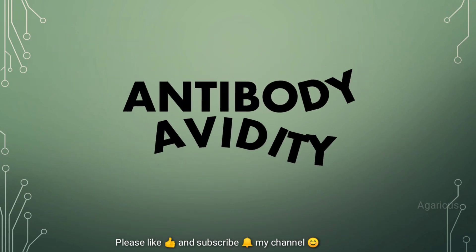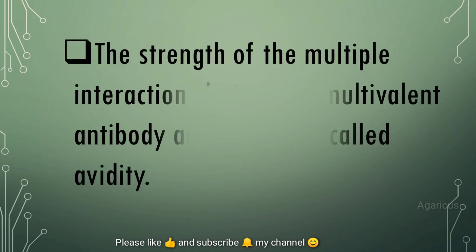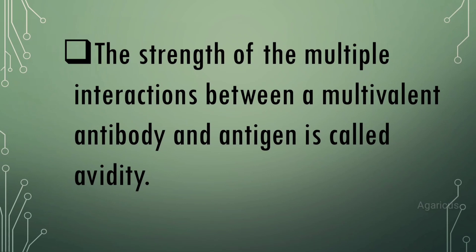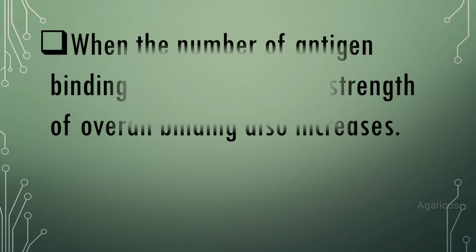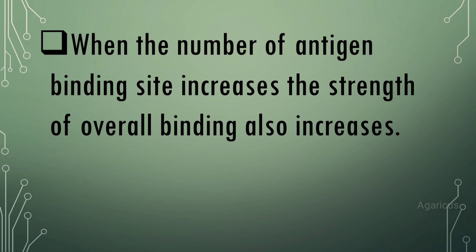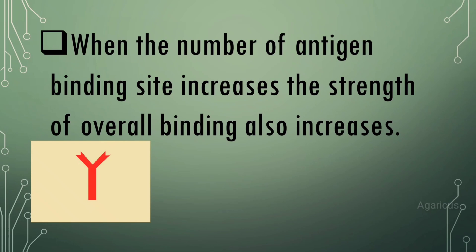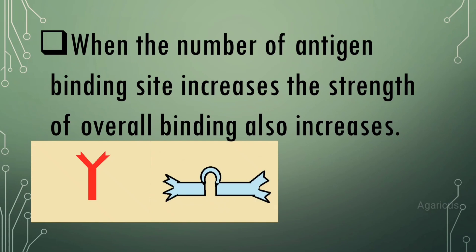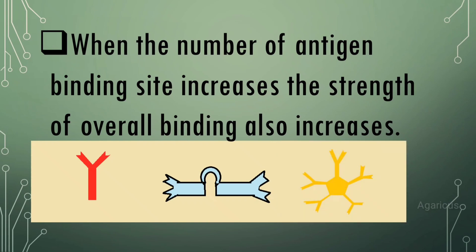Antibody avidity refers to the strength of the multiple interactions between a multivalent antibody and antigen. When the number of antigen binding sites increases, the strength of overall binding also increases. Immunoglobulin G has 2 binding sites, immunoglobulin A has 6 binding sites, and immunoglobulin M has 10 binding sites — meaning immunoglobulin M has the greatest strength.